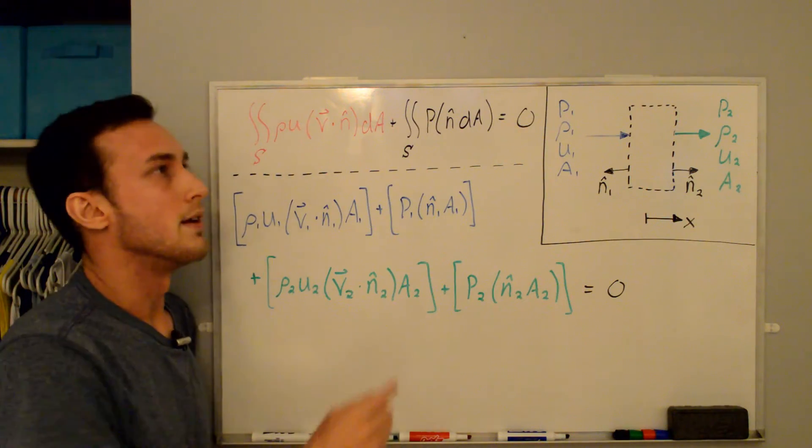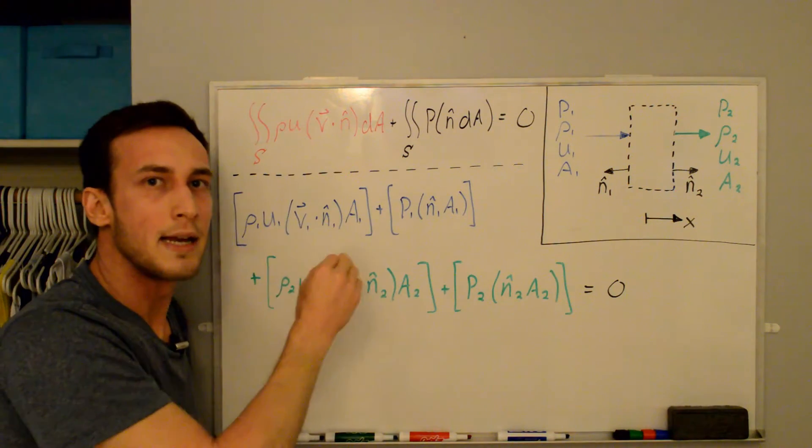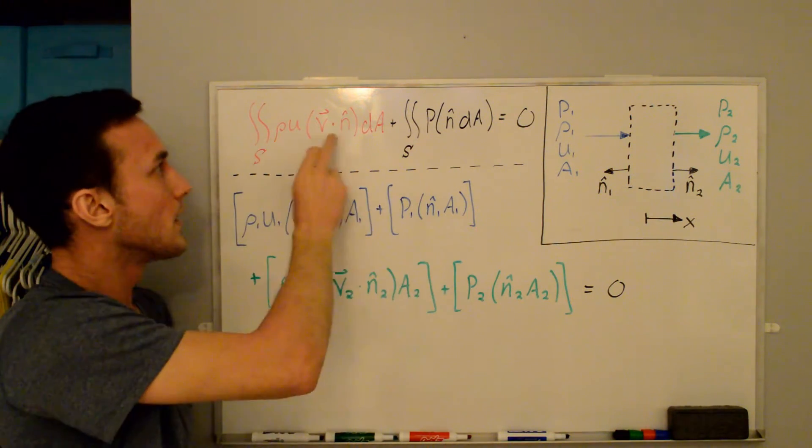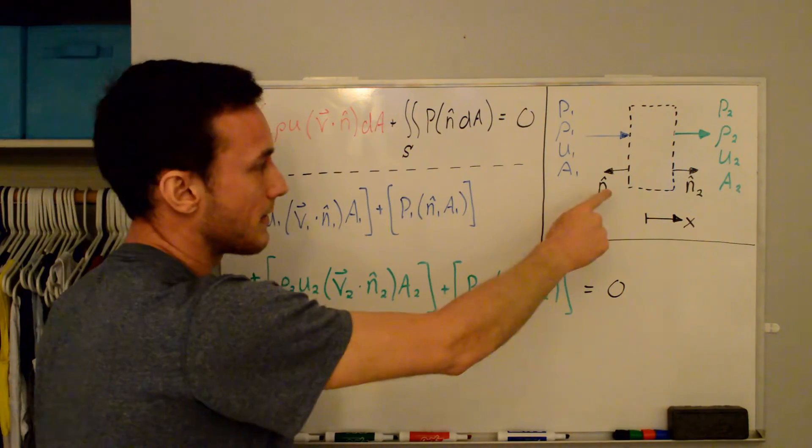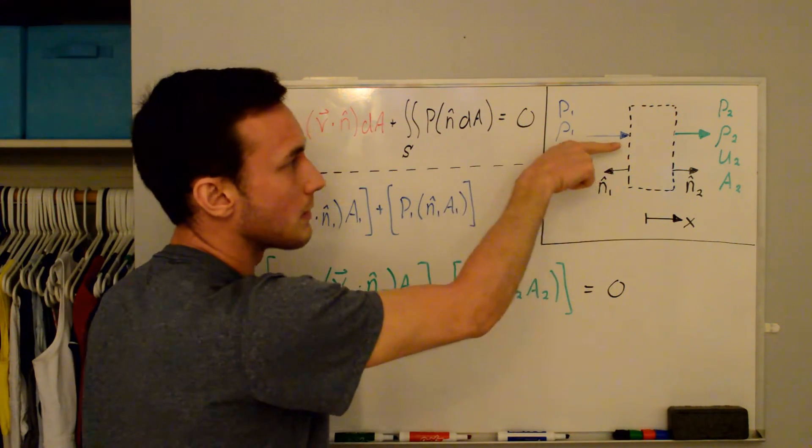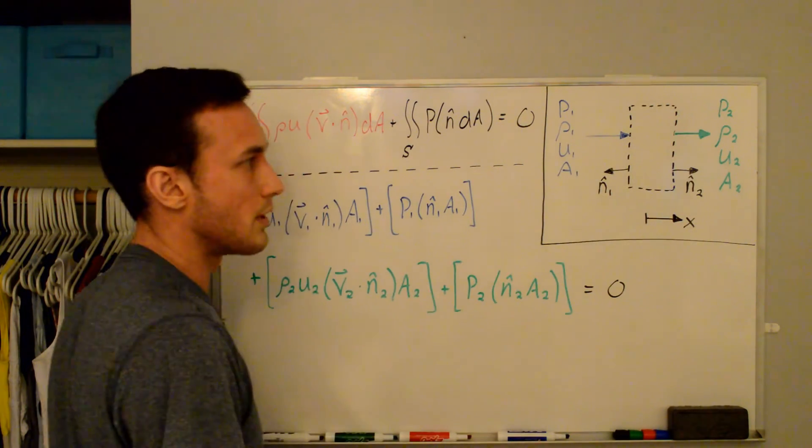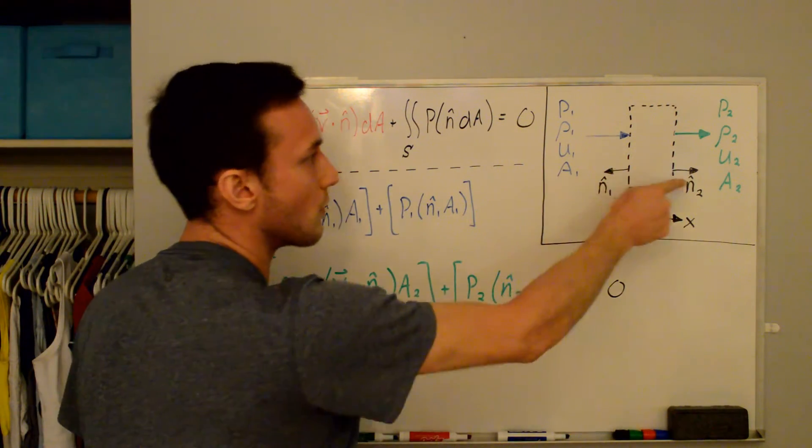Now again I've rewritten the equation up here but I've substituted it in that ds vector is equal to n hat dA scalar. So now you can look at this control volume over here that I've drawn and you'll see we have incoming flow from the left, outgoing flow on the right, the left is going to be blue, the right is going to be green from now on.